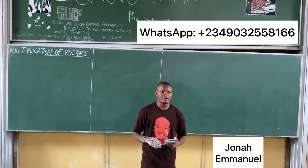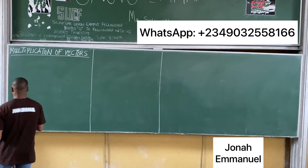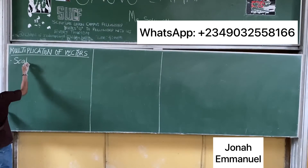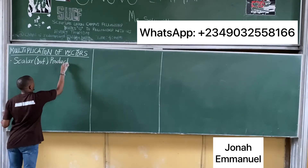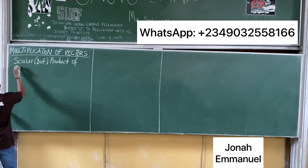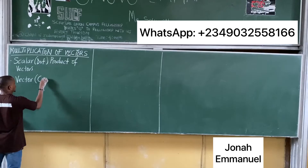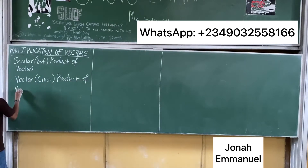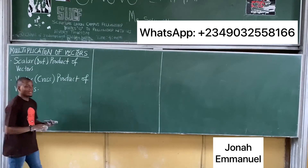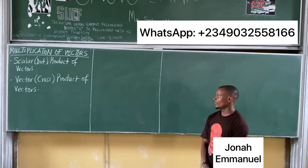First things first, vectors can be multiplied in two ways. The first one is called the scalar or dot product of vectors. The second one is called the vector or cross product of vectors. These are the two ways in which vectors can be multiplied — either by scalar/dot product or vector/cross product.